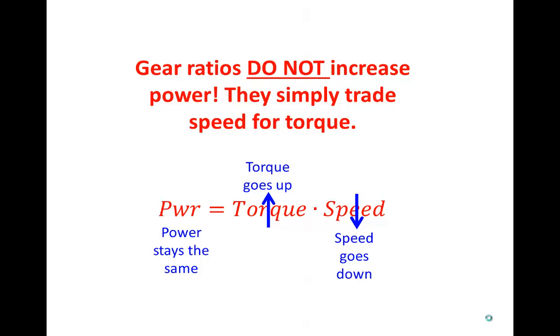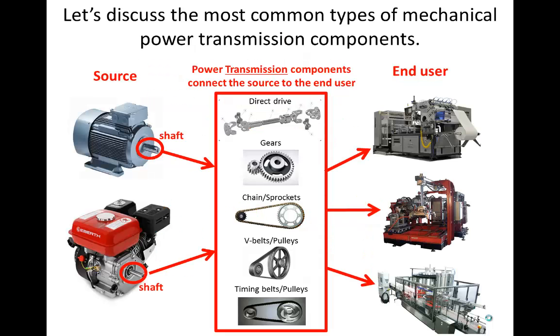As a matter of fact, in real life the power actually goes down because of inherent friction and inefficiency in the transmission — power certainly does not go up. In this video, we will discuss the most common types of mechanical power transmission components.